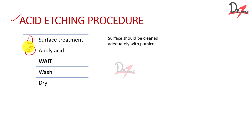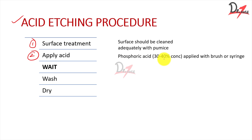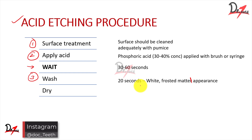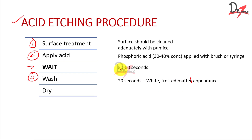Then we apply the acid — phosphoric acid in 30 to 40% concentration, either using a brush or a syringe. We wait for 30 to 60 seconds. After that, we wash the etchant off the surface for 20 seconds. We will then see a white frosted matte appearance — that is a viva question: how do you know the tooth has been etched? We see a white frosted appearance, and by that we know the surface is etched.